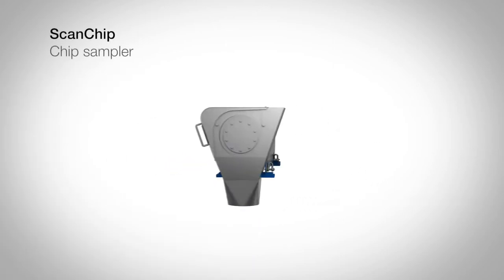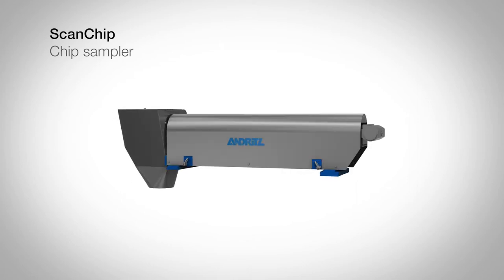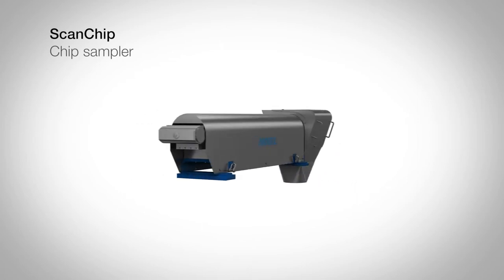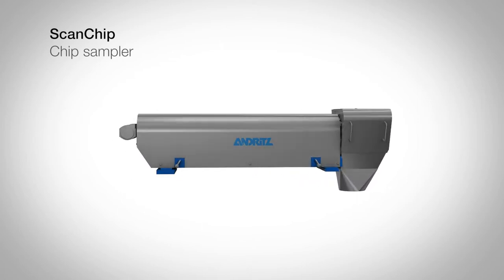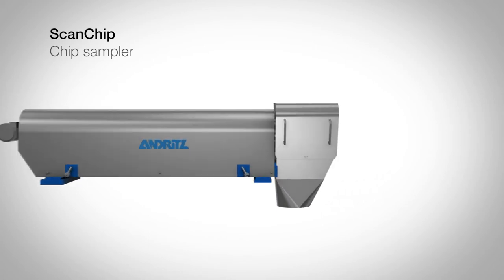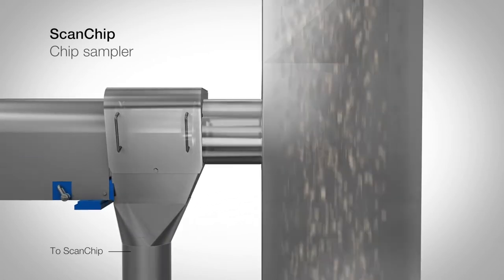In the online operation, the analyzer has an automatic chip sampler and one or more conveyors for returning the samples to the main chip flow, whereby the SCAN chip provides an online chip quality measurement system.